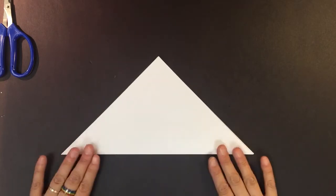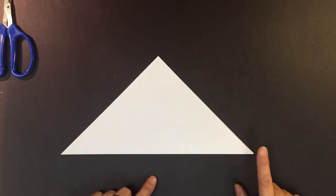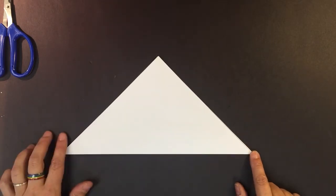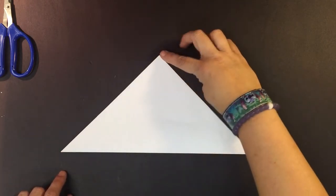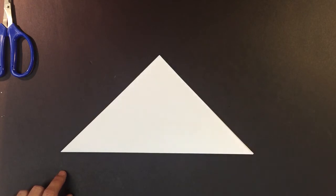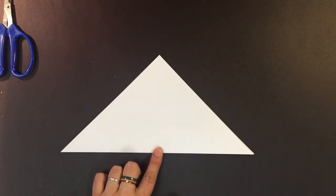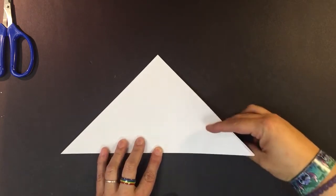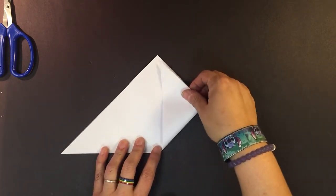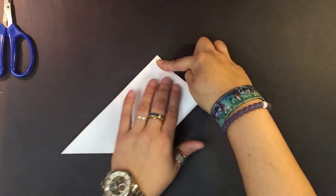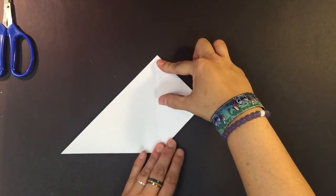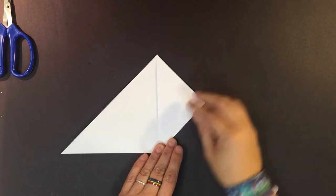The next step is we're going to take the triangle that we've now created and take this bottom corner here and this bottom corner here and fold them up to this corner. The easiest way is to take your free hand, place it in the center between the two corners, fold the corner up, match it with the top corner, then slide your fingers down and crease that fold.